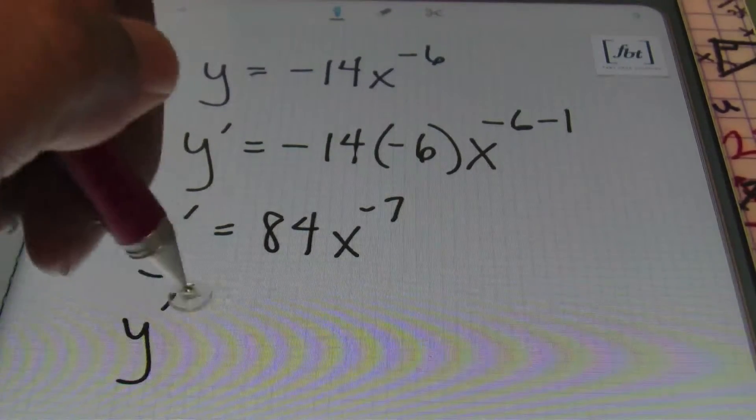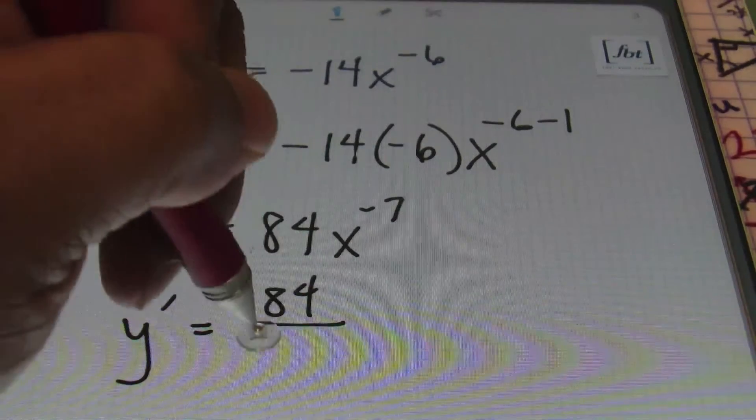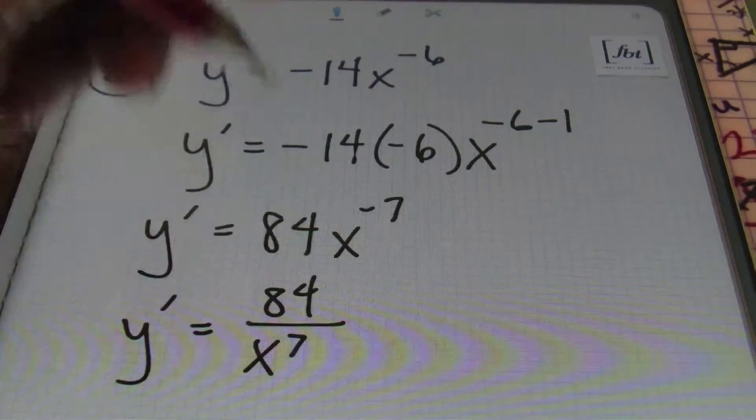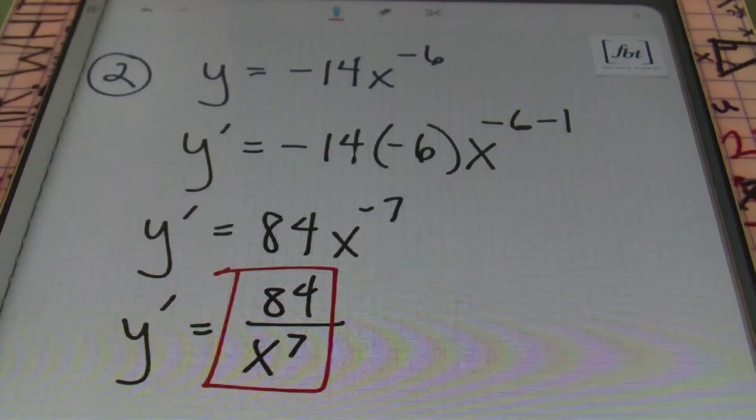Then in order to get rid of that negative exponent, you'll rewrite it as 84 divided by x to the 7th power, and this will be your answer, and that's it, done and done.